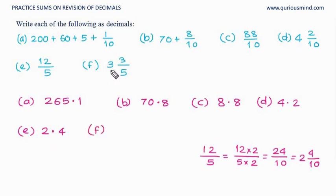F, we see 3 whole, so 3 should be as it is. But 3 upon 5, I have to make it 10. 5 twos are 10, so 3 twos are 6. 3, 6 upon 10. 3 is a whole and then 6 tenths. 3.6.